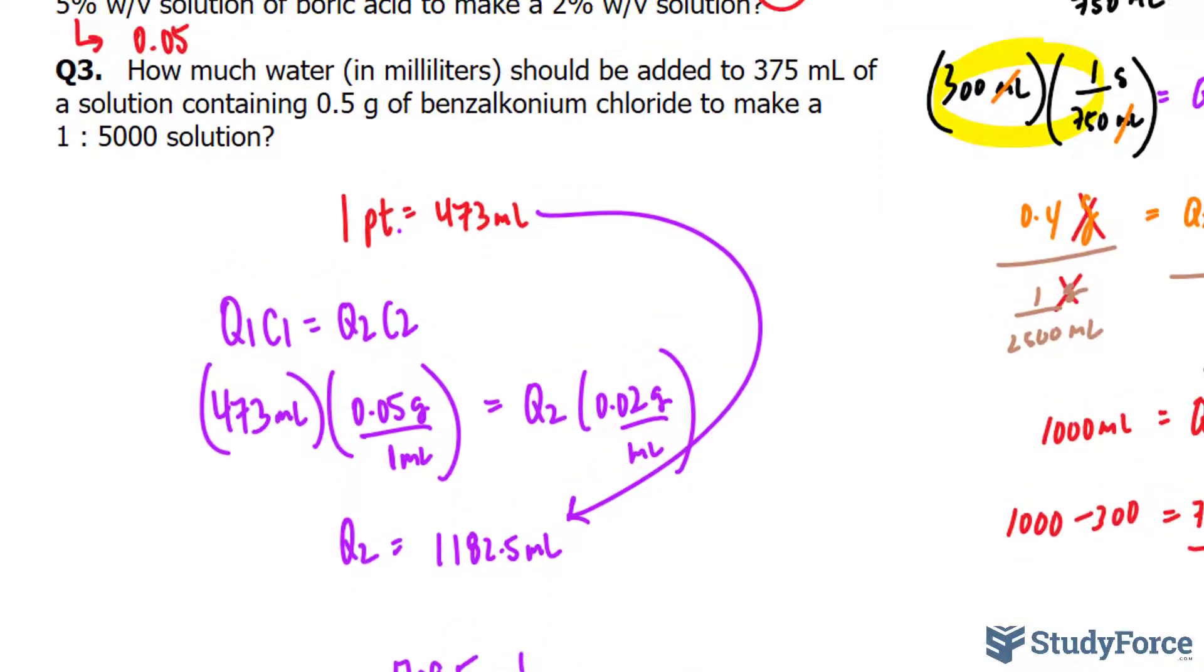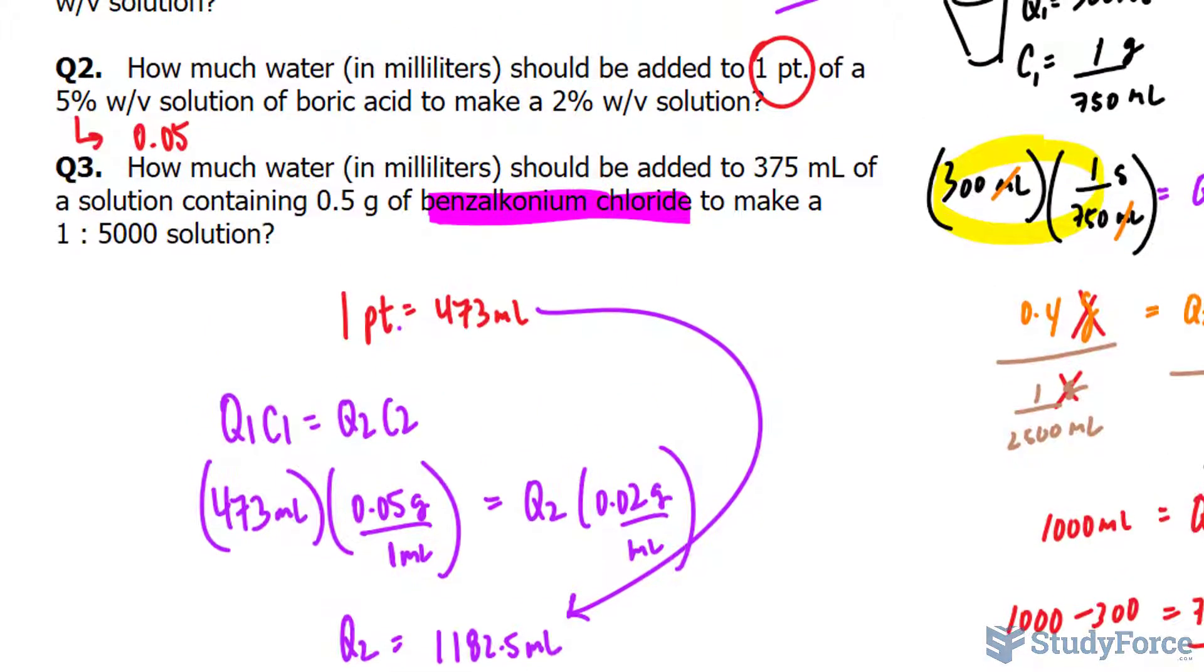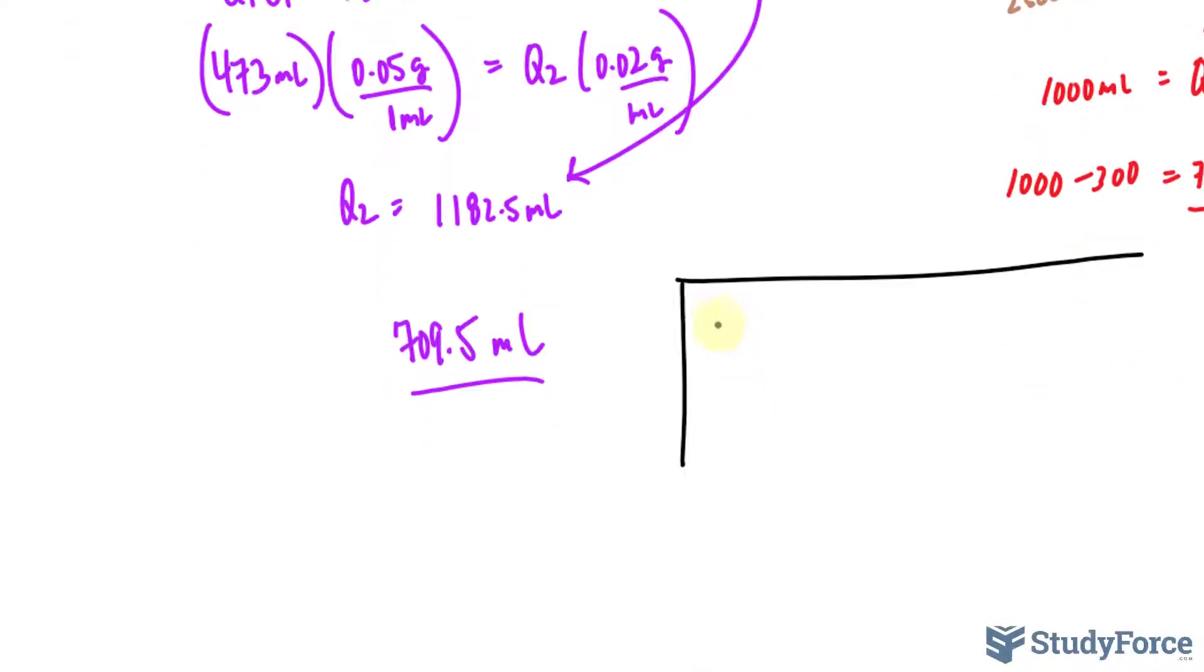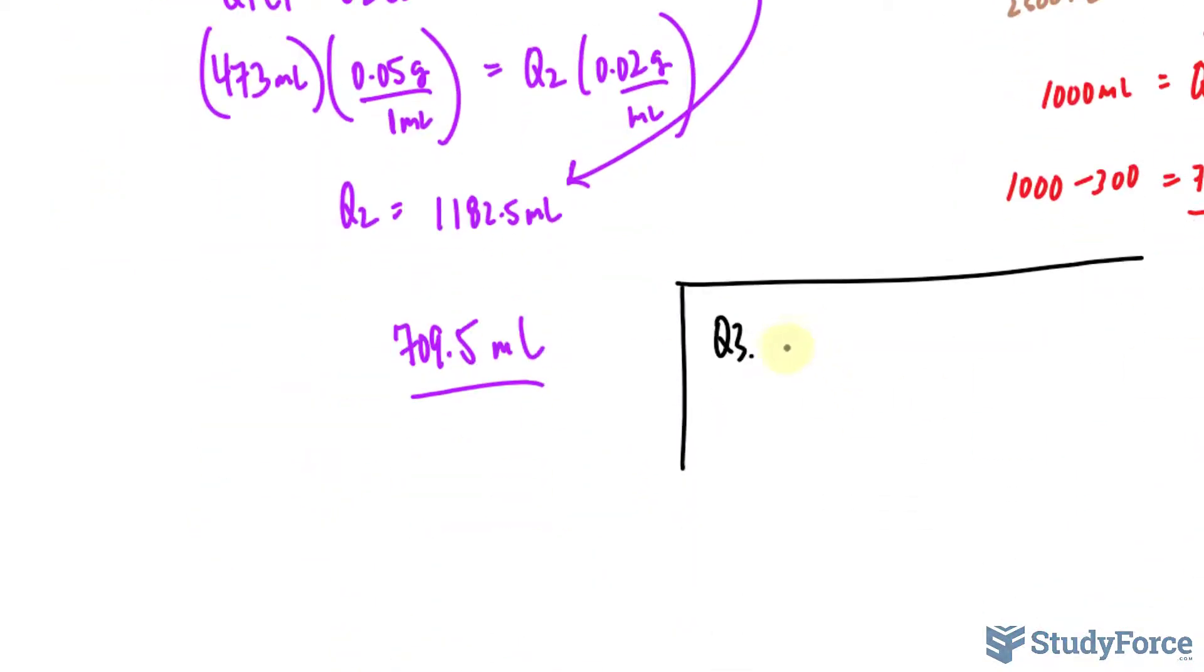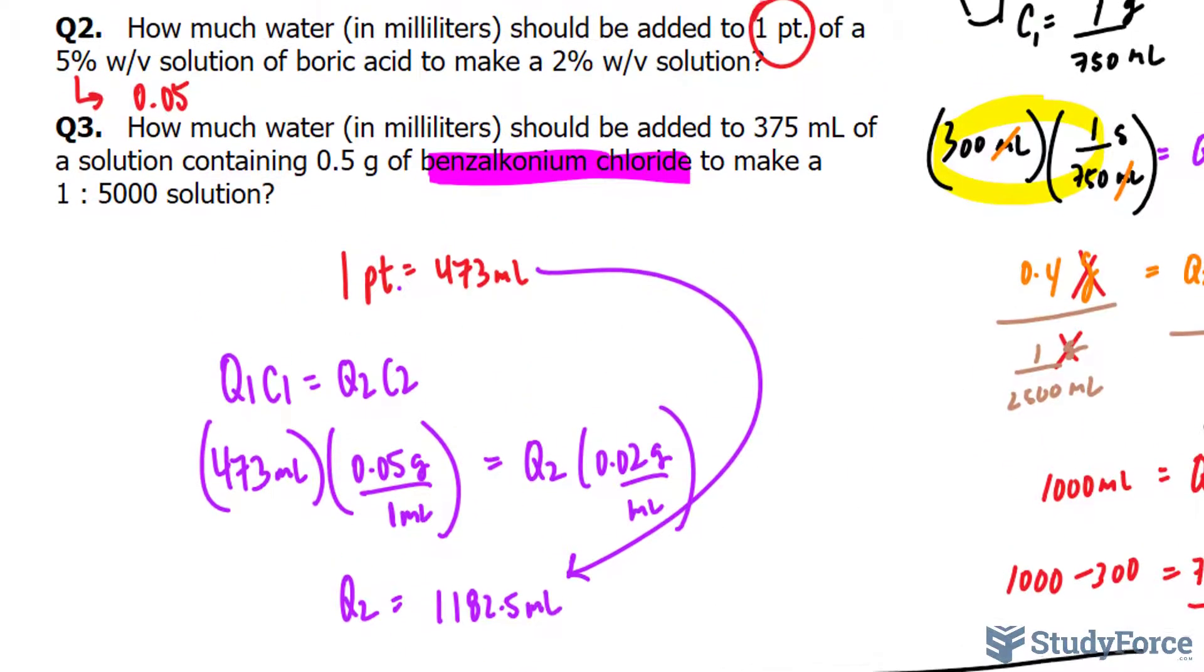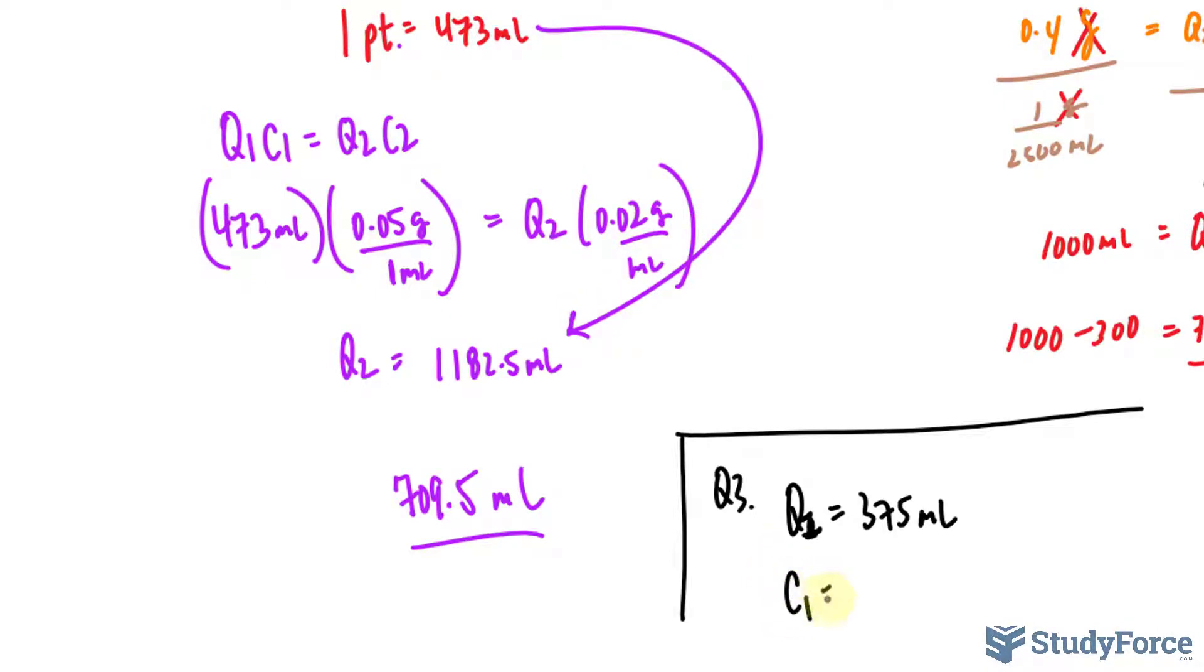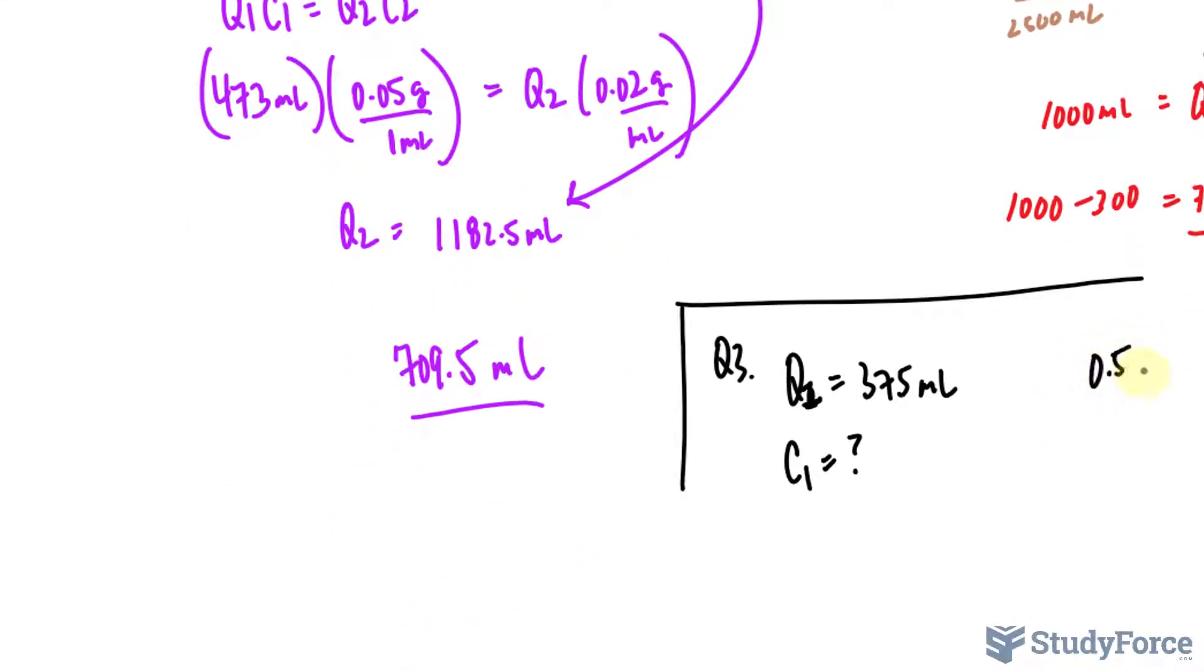Question number 3 reads, how much water in milliliters should be added to 375 milliliters of a solution containing 0.5 grams of benzalkonium chloride to make a 1 to 5000 solution? They really like using this benzalkonium chloride from where I got this question. The stock solution is 375, that's Q1, 375 milliliters. Its concentration is actually not given. That's a first, concentration not given, but we are told the active ingredient is 0.5 grams.